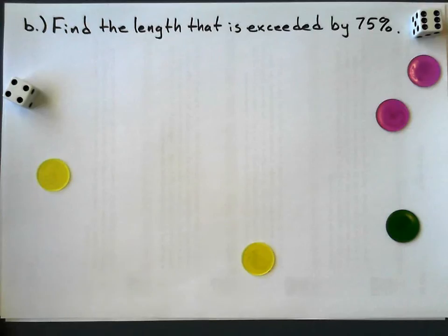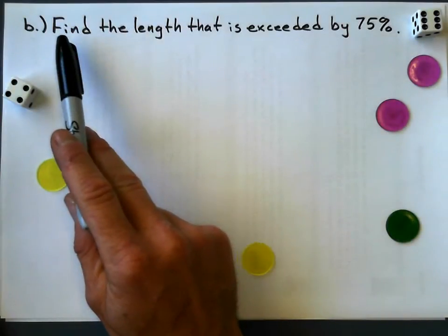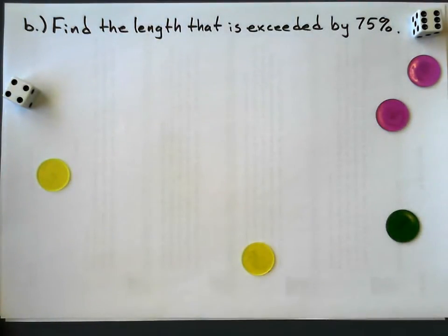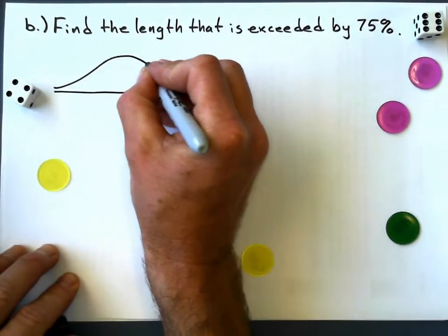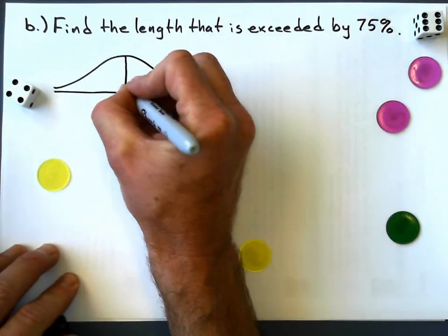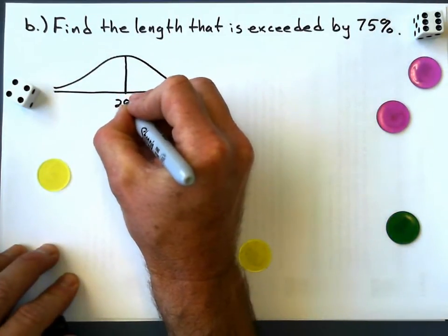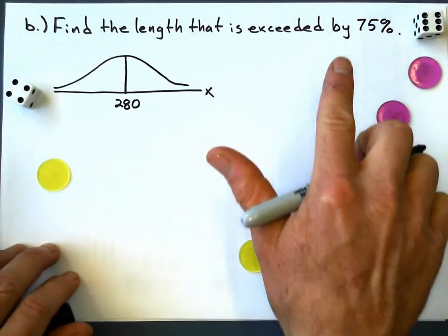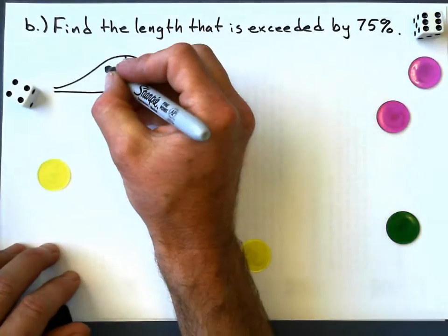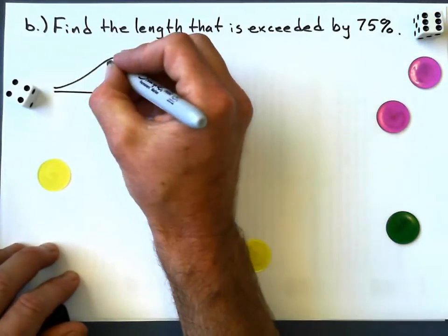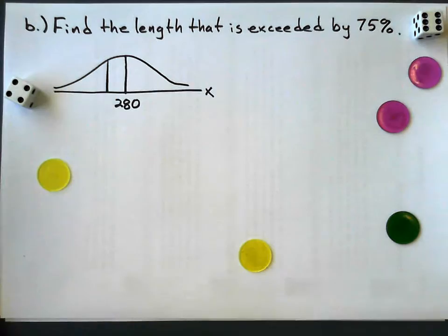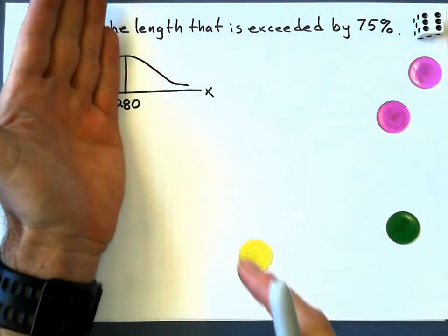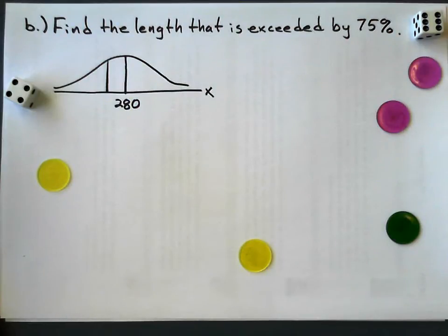Let's look at another example here. Using the same mean and standard deviation, let's try this one. Find the length that is exceeded by 75%. Still normally distributed, so I'm going to draw my X curve. My mean is still 280 millimeters. Now, more than 75%, well that's more than half. So that means it's going to be, I'll say it's about right here, I guess. And it means that everything to the right of that is going to be 75%, because remember, that's 50%. Half of the curve is 50%.